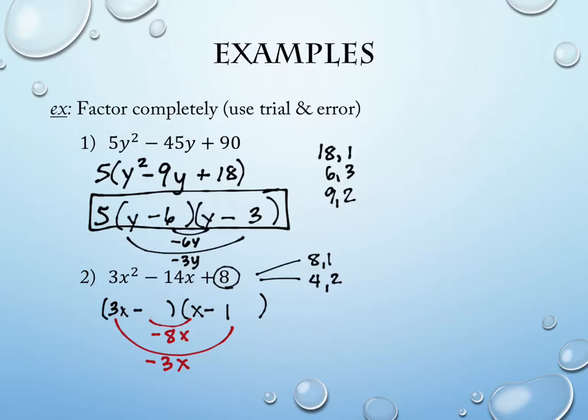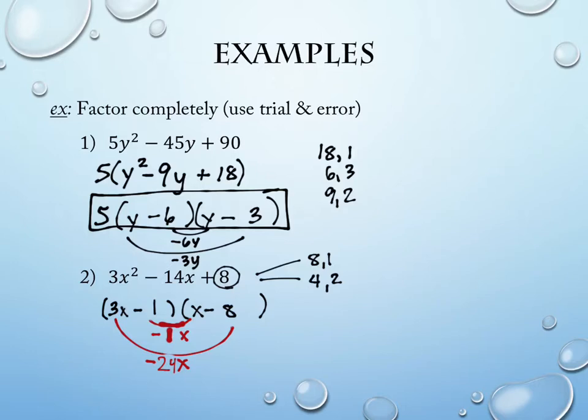Let's pick 8 and 1 and start at the top. The way I decide whether it works is I multiply in the middle, multiply on the outside, and see if they add to the right value. This is negative 8x and negative 3x — will those combine to give me negative 14? No. So I change them — maybe it's 1 and 8 instead. Now I have negative 1x in the middle and negative 24x on the outside. Do those add to negative 14? No.